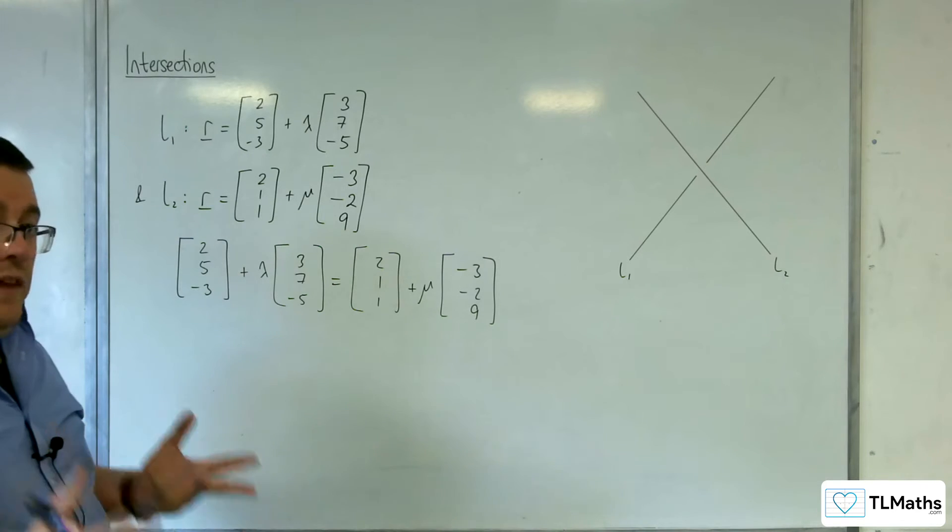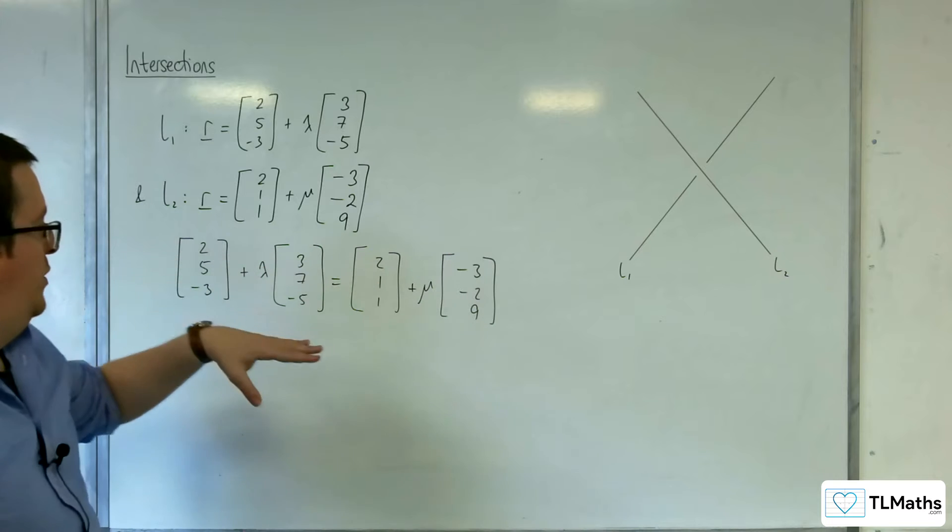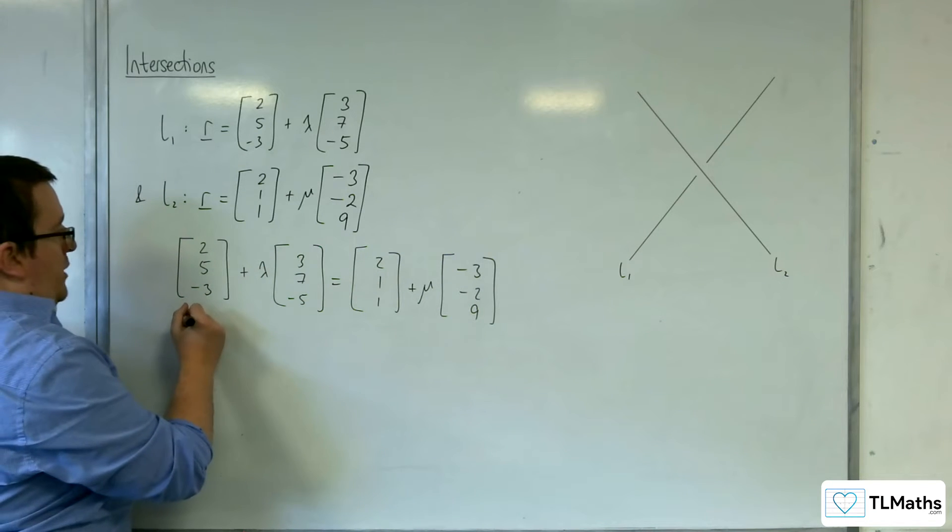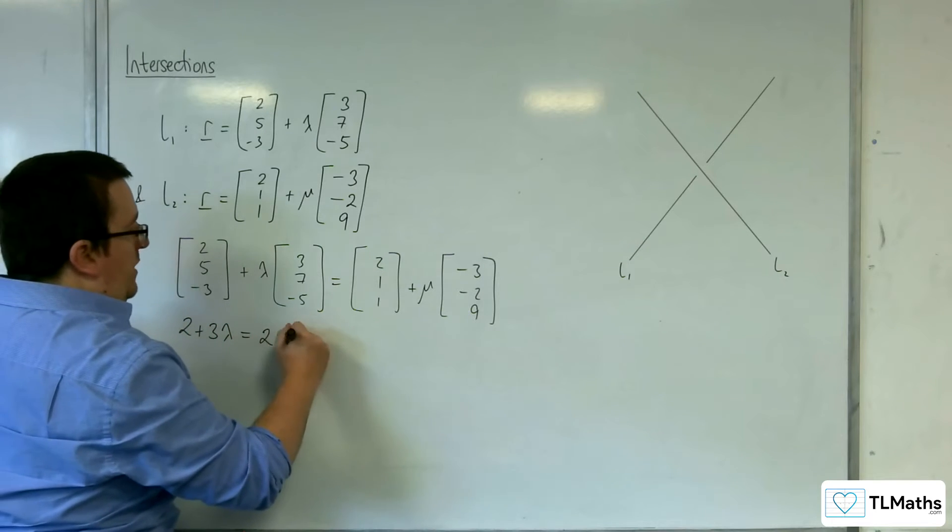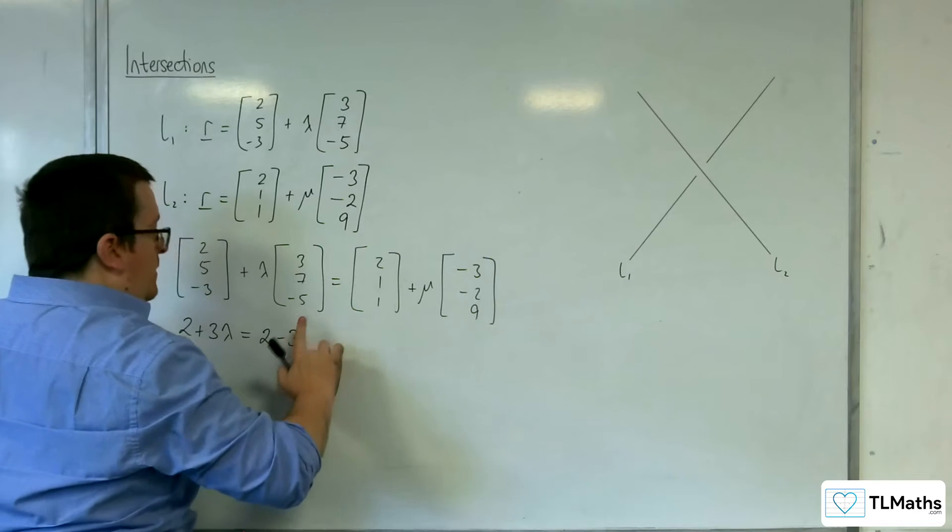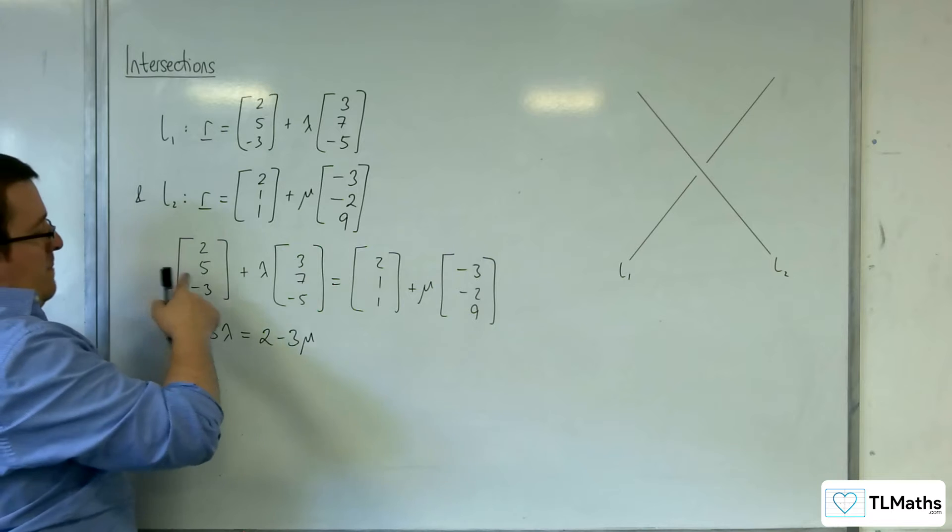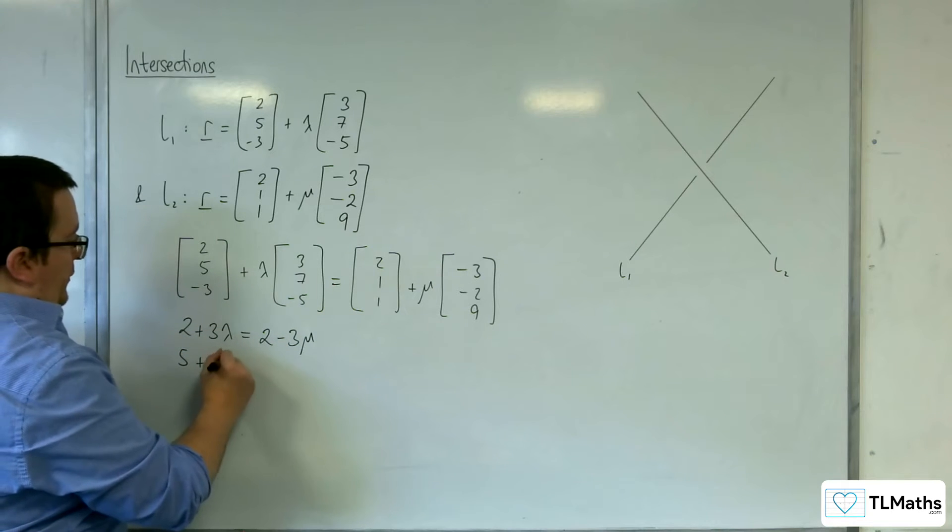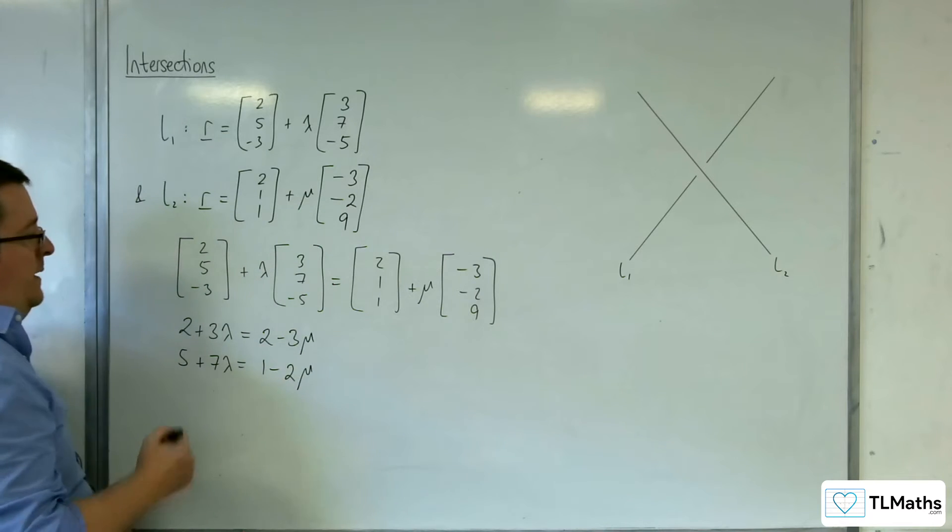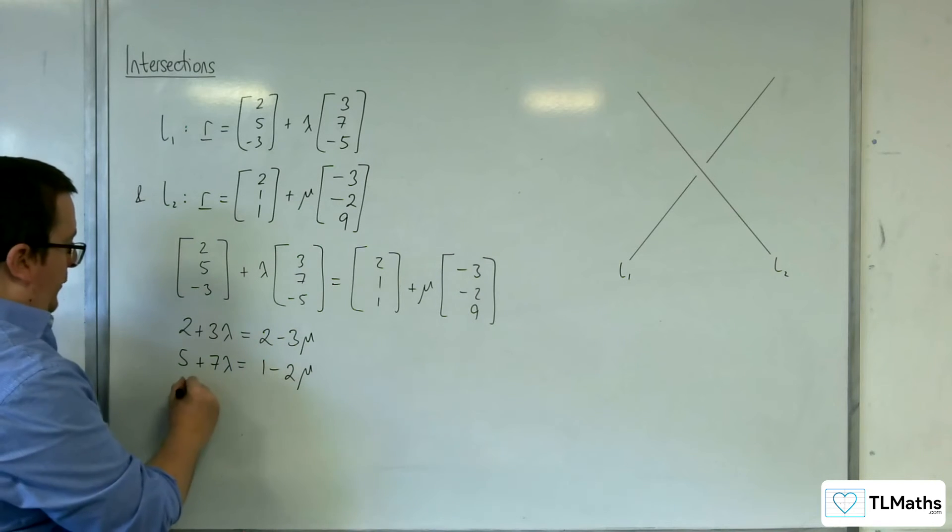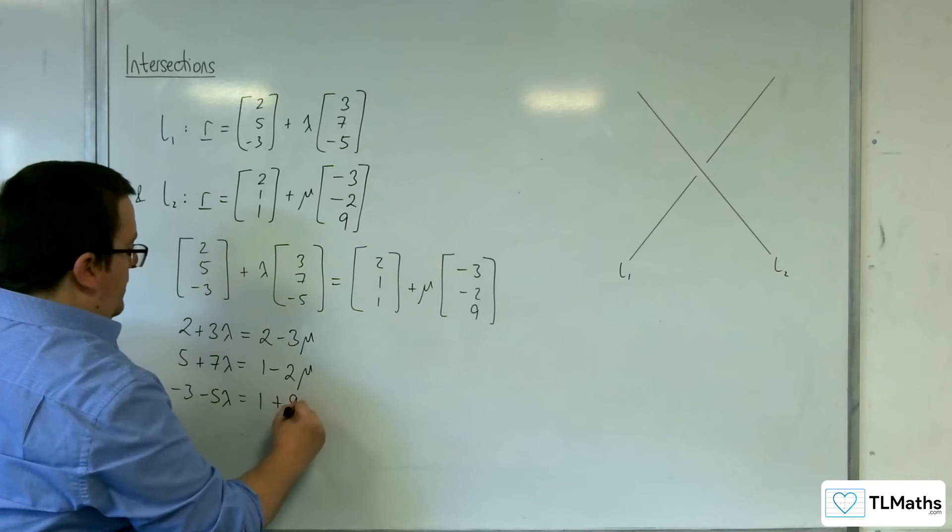Now what this gives us is a top row, middle row, and bottom row. So I can write down three equations. 2 plus 3 lambda is equal to 2 take away 3 mu. So that's our top row. The middle row, we've got 5 plus 7 lambda is equal to 1 take away 2 mu. And the bottom row, we've got minus 3 take away 5 lambda is equal to 1 plus 9 mu.